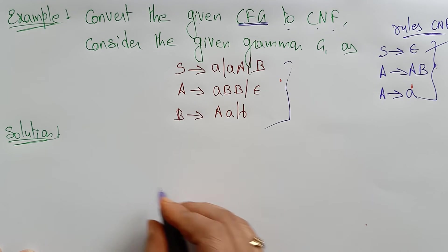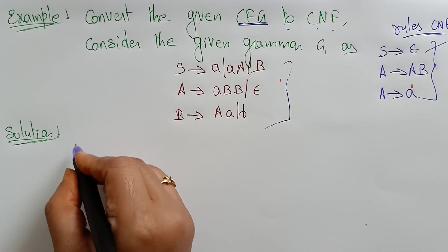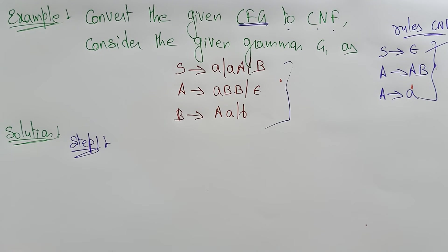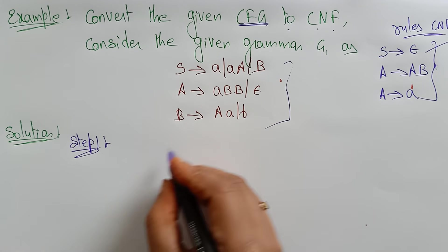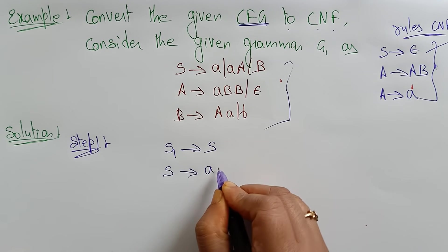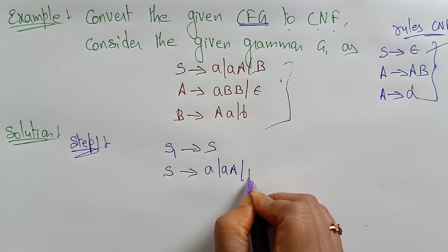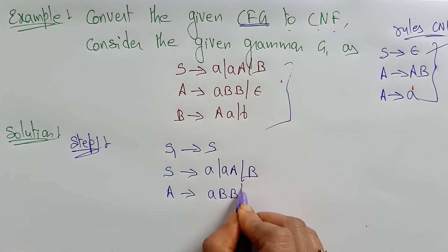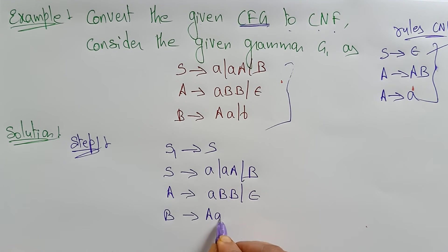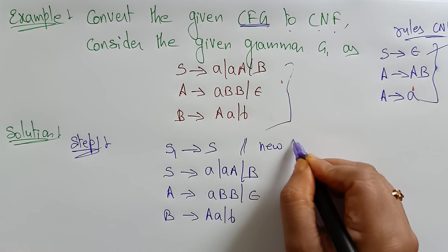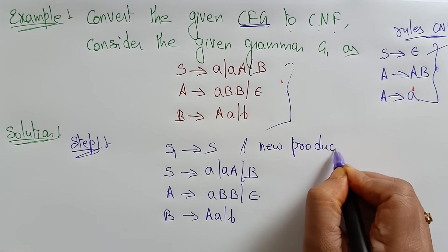Now let's convert it. We will create new productions. The first step is to take a new start symbol — you have to add a new production. So we create S1 determines S. The grammar is: S determines AAB, A determines ABB and epsilon, and B determines AAB. Step one is just adding the new production S1 → S.